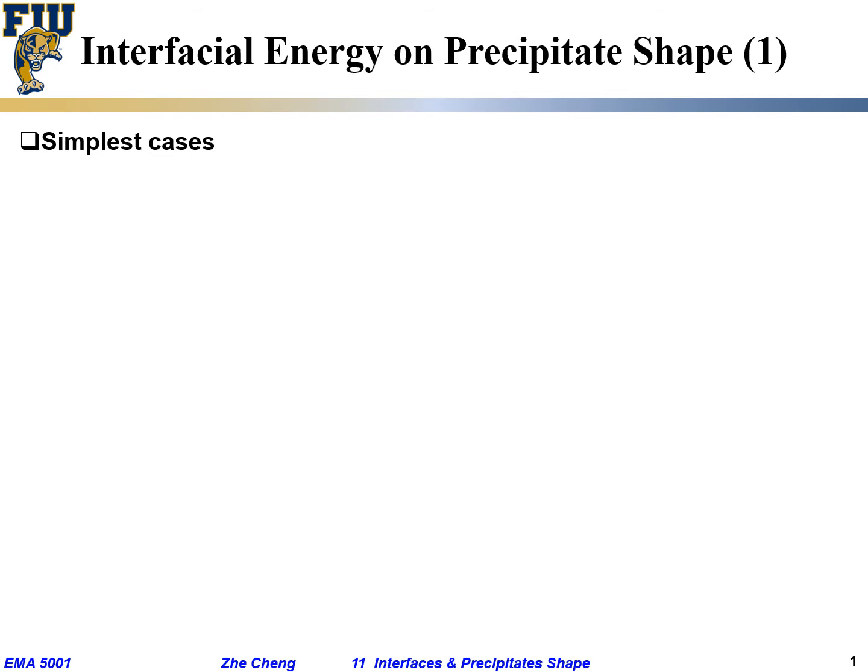So how do we understand the interfacial energy on the precipitate shape? One phase coming out from another phase, what's the shape? The simplest case would be beta precipitate within alpha single crystal.